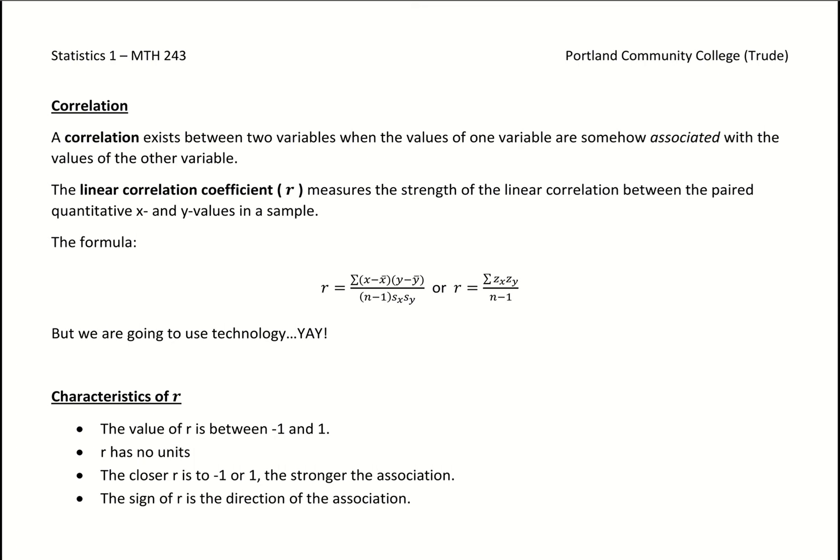Another way that we can get a description for direction and strength is evaluating the correlation of our data. How well is it correlated, and is it a positive correlation or negative correlation? This comes down to the value r.